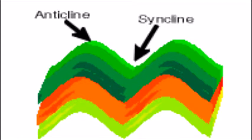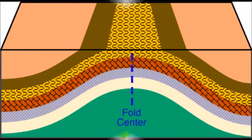Volcanic island arcs are formed by volcanic activity underwater. A syncline has old, young, old layering — the deepest depends on the type of rock. A syncline is a U-shaped form, while an anticline is the arc-shaped or rainbow form.